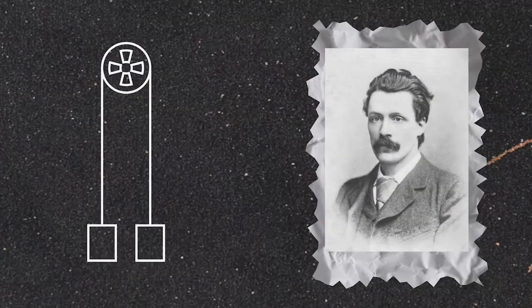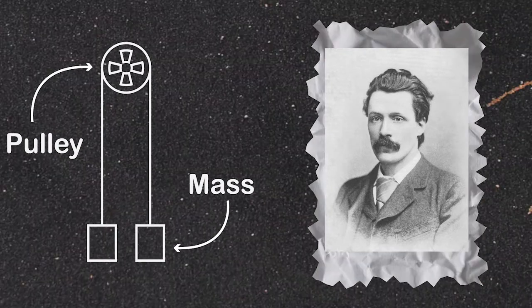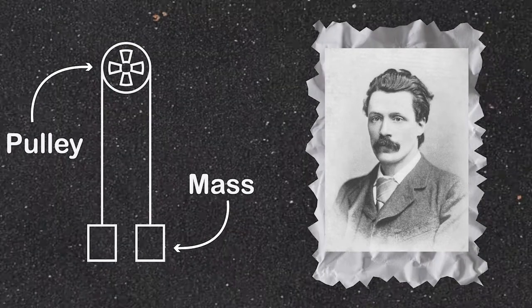Invented by English mathematician George Atwood in 1784, the Atwood machine is a simple device consisting of a system of masses connecting to either end of a nearly massless string and a nearly frictionless pulley over which the string passes.